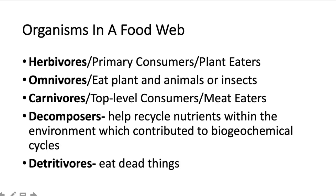We also have decomposers and detritivores. Decomposers usually break down dead things — things like bacteria, mushrooms, or fungi — and they help recycle nutrients through the environment, contributing quite a bit to your biogeochemical cycles. Think of nitrogen being decomposed from an old dead plant broken down by a mushroom in a forest. Detritivores eat dead things — the term 'detritus' literally means dead stuff in an ecosystem — so detritivores are eating your dead stuff.